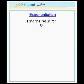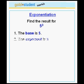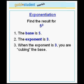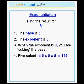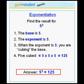Let's do another example. Let's find the result for 5 to the power 3. The base is the number 5 and the exponent is the number 3. When the exponent is 3, you are cubing the base. Here, we have 5 cubed, or in other words, 5 times 5 times 5, which is equal to 125. Therefore, 5 to the power 3, or 5 cubed, is 125.